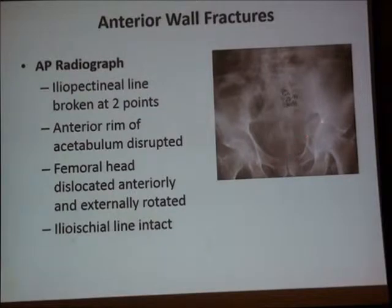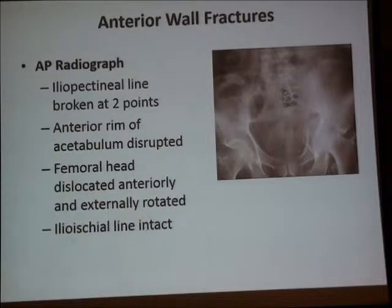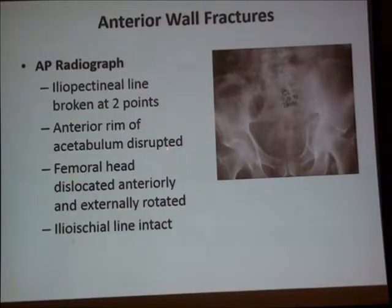The integrity of the ischio-pubic ramus differentiates the anterior wall from the anterior column fracture. On plain X-ray, we will see the two fracture lines — the iliopectineal line is broken at two points — but the ilioischial line remains intact. The femoral head may sublux anteriorly and medially sometimes. The iliopectineal line is still intact, confirming the injury is anterior, with disruption at the intermediate segment at two points and an intact ischio-pubic ramus.